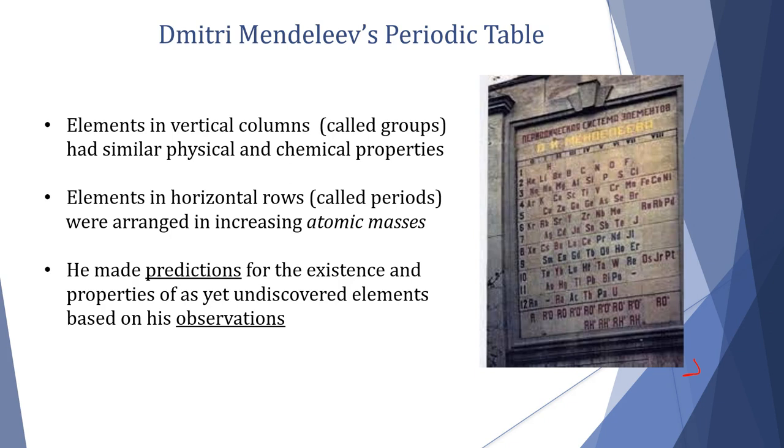But it does have the common pattern that we understand which has elements in vertical columns called groups - these are groups such that they have similar physical and chemical properties. And then elements in the horizontal rows which we refer to as periods are arranged in increasing atomic mass from left to right.